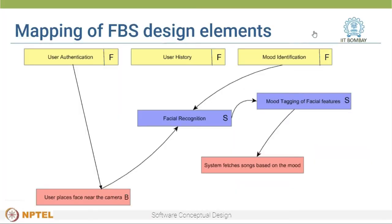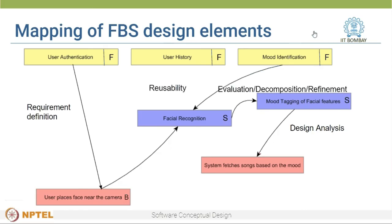So how is this mapping actually done? While mapping the FBS design elements, certain software processes get initiated. For example, when the function is mapped to a behavior, the requirement definition process gets initiated. When a structure is mapped to a behavior, the design analysis process gets initiated. And so on — certain software processes get initiated during the mapping.